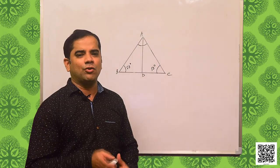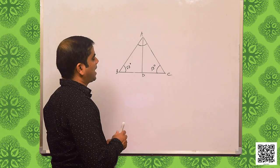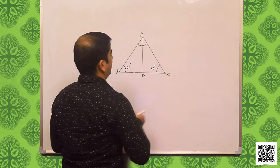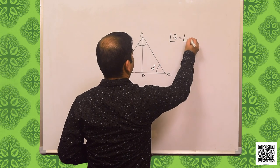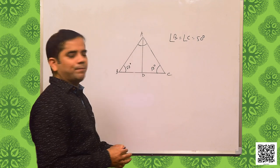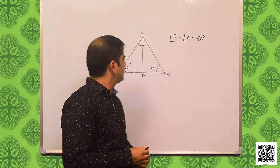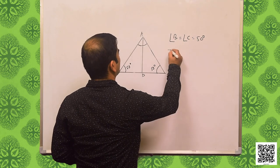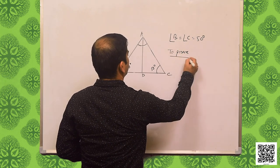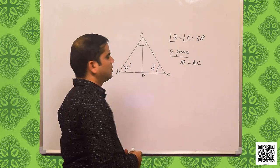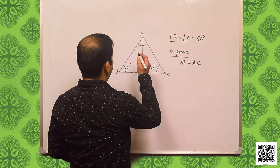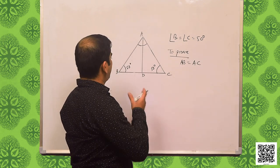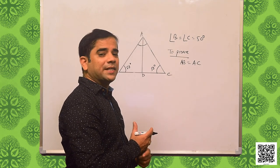As given in your book, I have constructed a triangle ABC in which, as per the given data, angle B is equal to angle C — that is, 50 degrees. So, this is also an isosceles triangle. We need to prove that the sides opposite to the equal angles of the triangle are equal to each other — that means we need to prove AB is equal to AC.